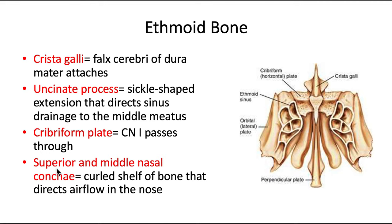The superior and middle nasal conchae, or turbinates, are also part of the ethmoid bone. They are curled shelves of bone that direct airflow in the nose.